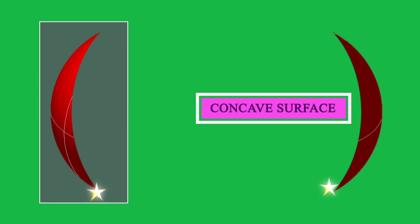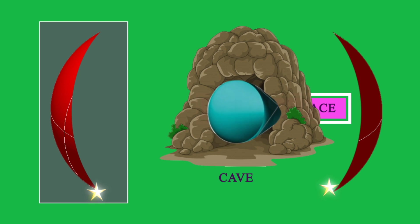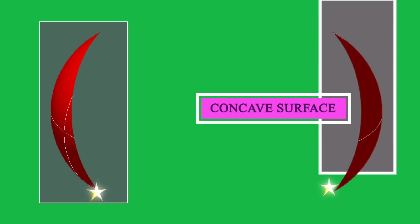Both convex and concave surfaces can be confusing to remember, but just remember the word 'cave.' Have you seen any cave? It looks like this — we enter and it is curved inwards. If you see a section it looks like this, and if you cut a portion it will be just similar to our concave surface. So we are now able to remember the concave surface.